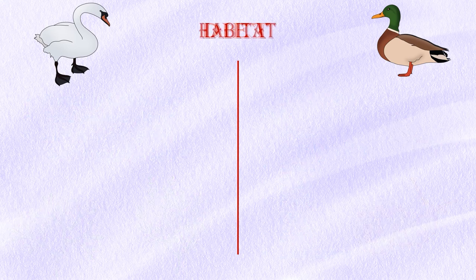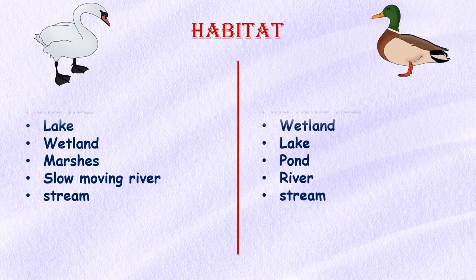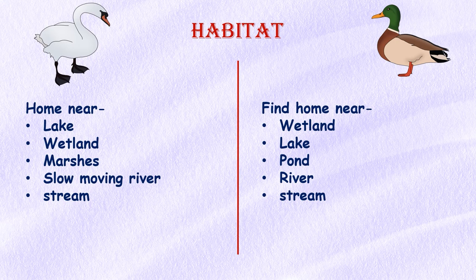Habitat: Both swans and ducks are categorized as aquatic birds and therefore prefer living closer to the water. Swans nest on islands, reed beds, and dense vegetation close to lakes, wetlands, marshes, slow-moving rivers, and streams. Ducks also find a home in wetlands near rivers, ponds, lakes, and streams.